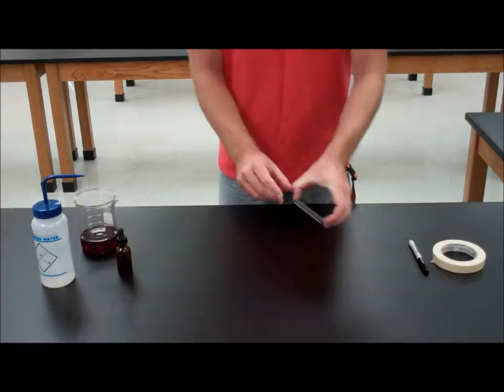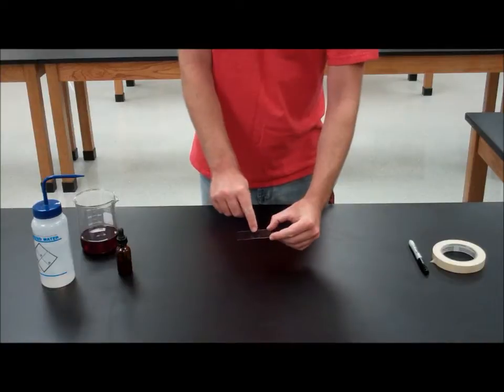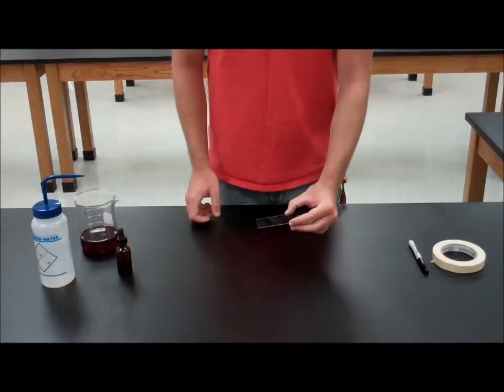The first thing you're going to need to do is take your microscope slide and place your sample approximately in the center. Whatever your sample may be, take a small piece and put it right in the middle.